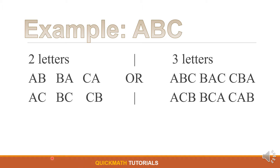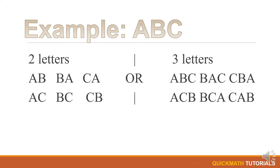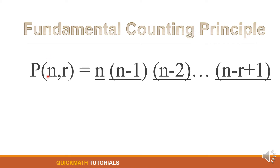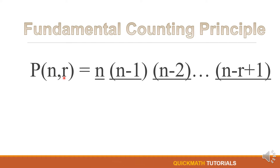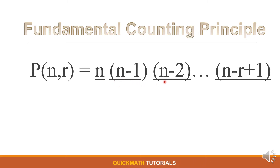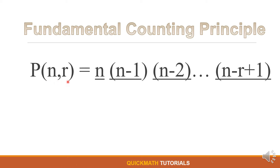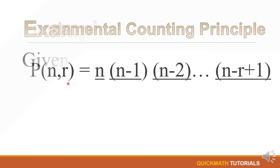But how will we know the number of possible arrangements, or the number of permutations? There are four formulas that can be used in solving the number of permutations depending on the problem given. The first formula is the Fundamental Counting Principle. The permutation of n distinct objects taken r at a time is equal to n times (n minus 1) times (n minus 2) up to (n minus r plus 1), where n is the number of objects given and r is the number of objects to be arranged.